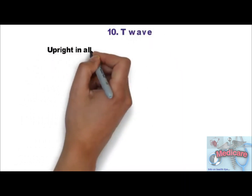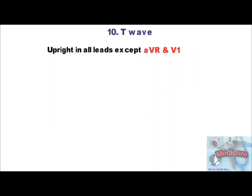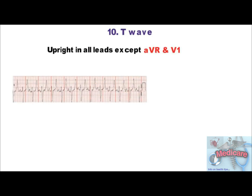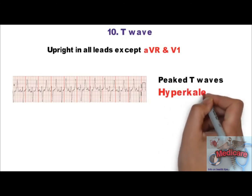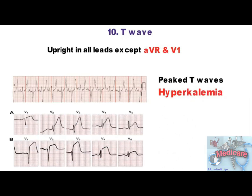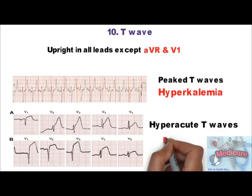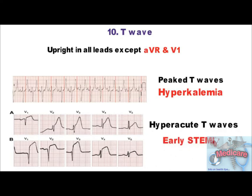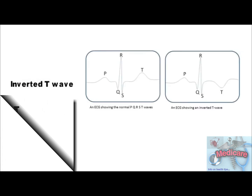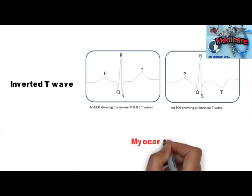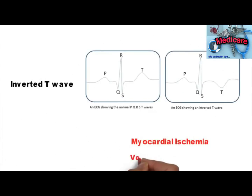The last step is T wave. It is upright in all leads except AVR and V1. Tall, narrow, symmetrically peaked T waves are commonly seen in hyperkalemia. Broad, asymmetric, peaked — or hyperacute — T waves are seen in early stages of STEMI. Inverted T waves are seen in myocardial ischemia or infarction, or can indicate ventricular hypertrophy.